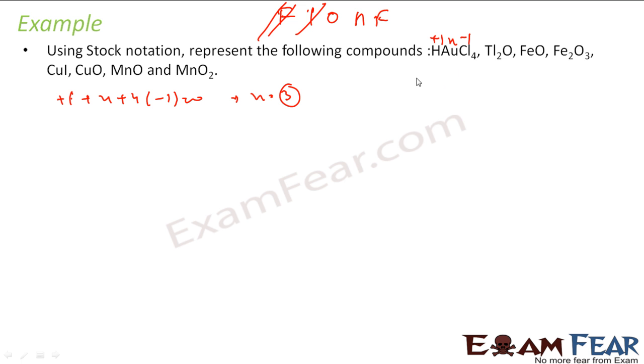So this X is equal to three. I have to write this as H Au(III) Cl4, correct.